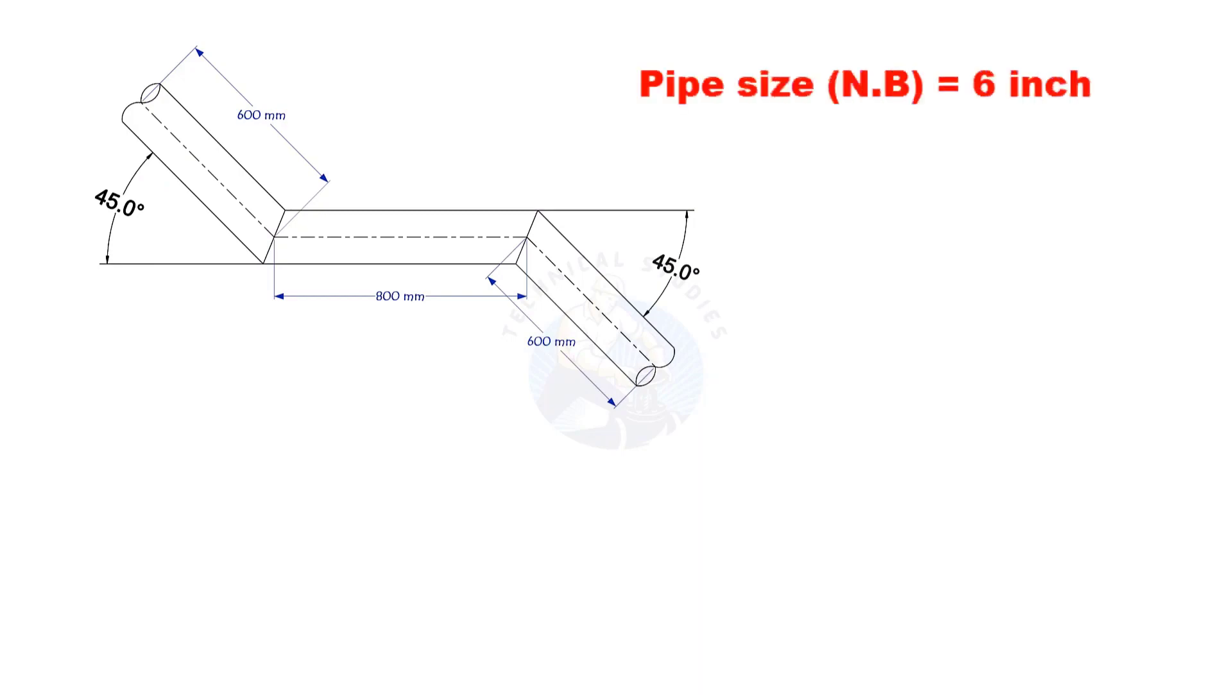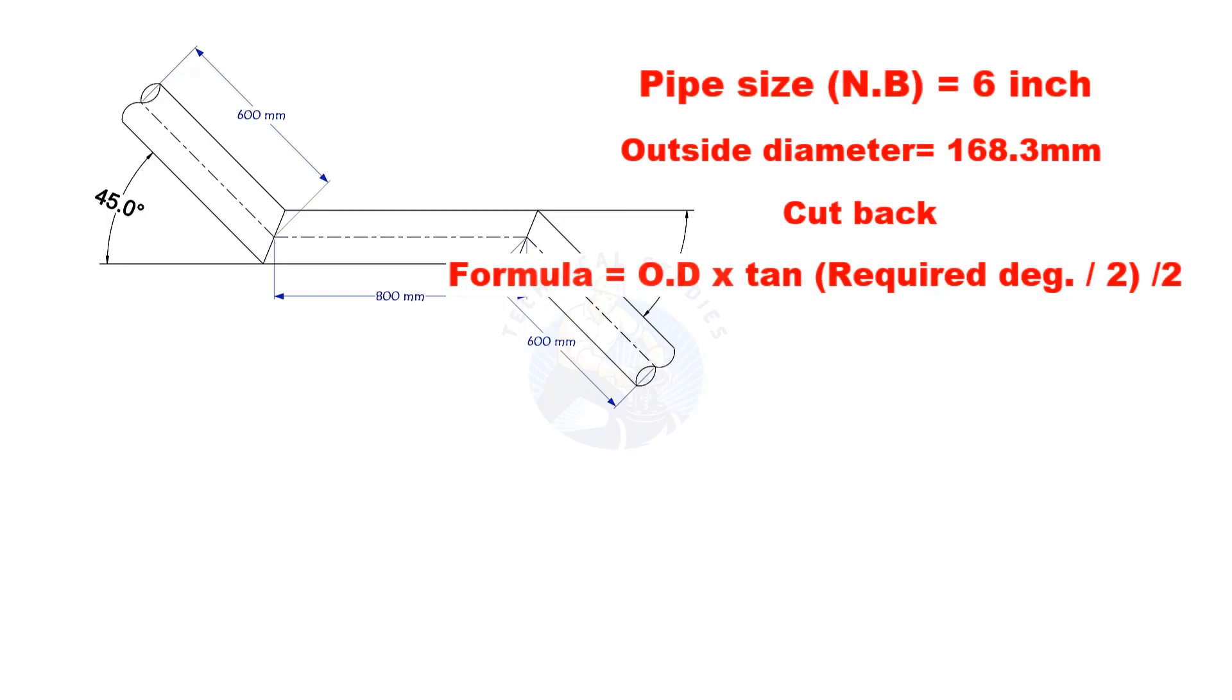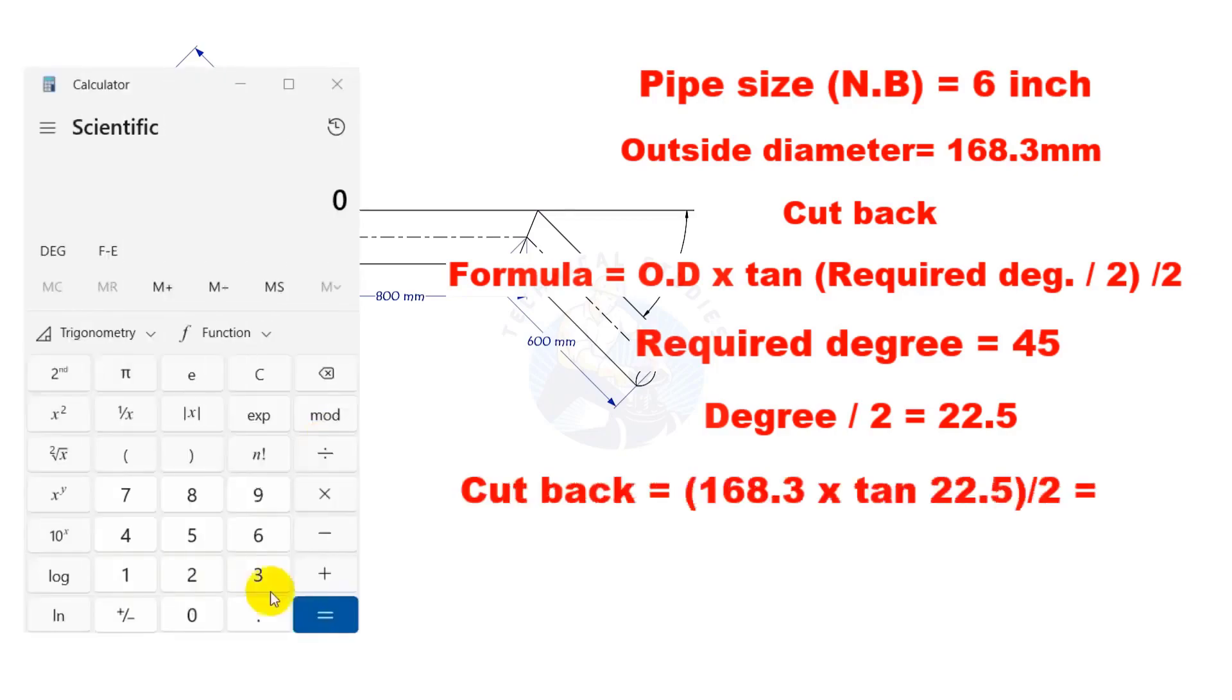The outside diameter of a 6 inch pipe is 168.3 millimeters. Cutback is OD multiplied by tan half degree divided by 2. Here, the required degree is 45. Half of 45 is 22.5. Let us calculate. The cutback is nearly 35 millimeters.